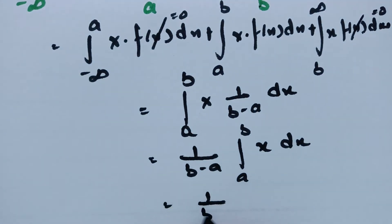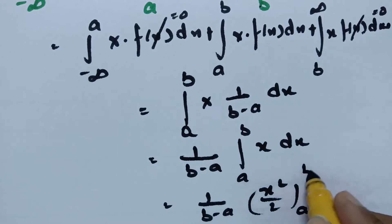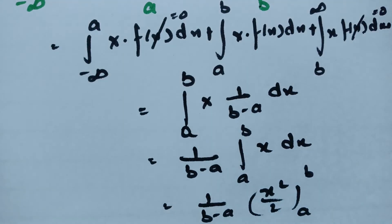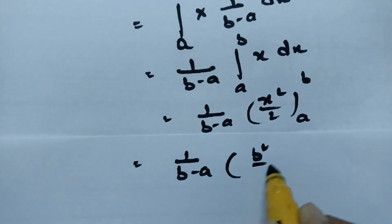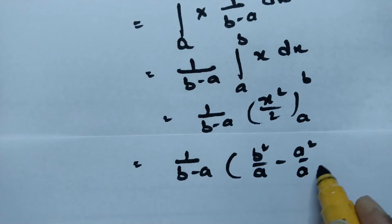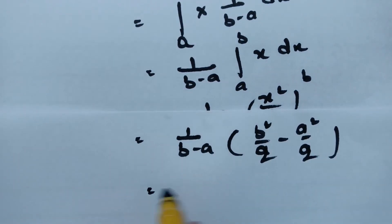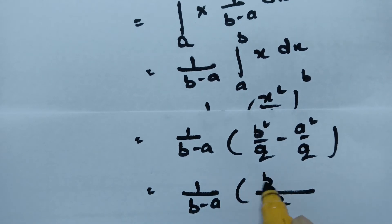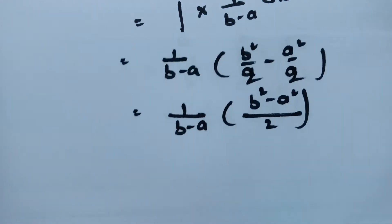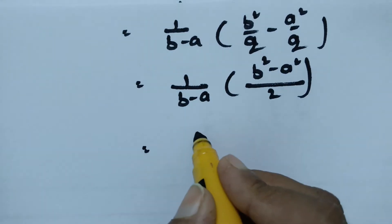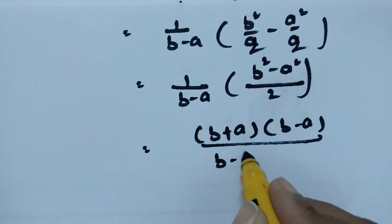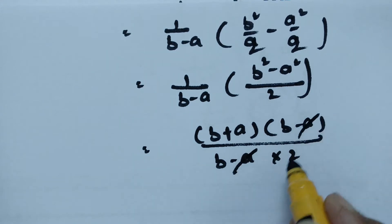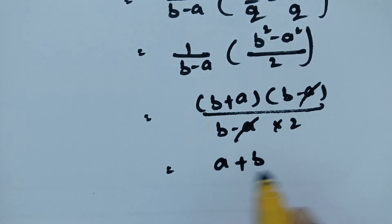Taking 1/(b − a) as a common factor, we get (1/(b − a)) times the integral from a to b of x dx. Integrating, this becomes (1/(b − a)) times [x²/2] from a to b, which equals (1/(b − a)) times (b² − a²)/2. Since b² − a² = (b + a)(b − a), we can cancel (b − a), giving the mean value a + b divided by 2.